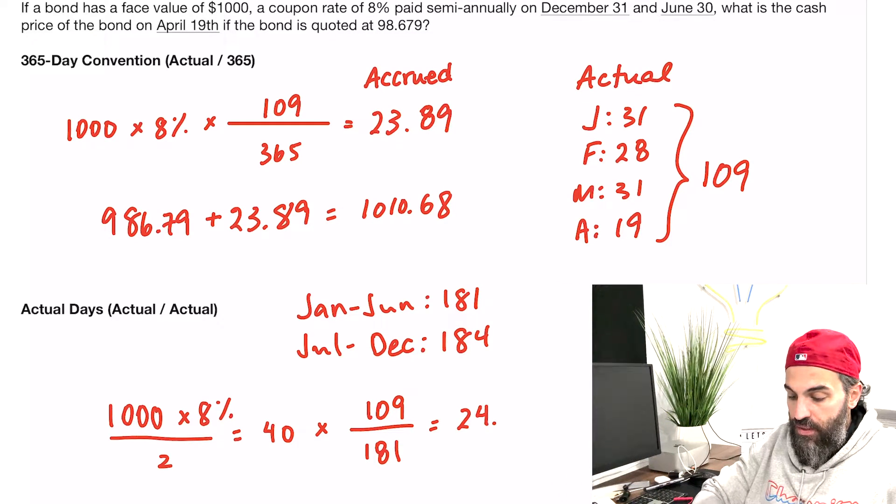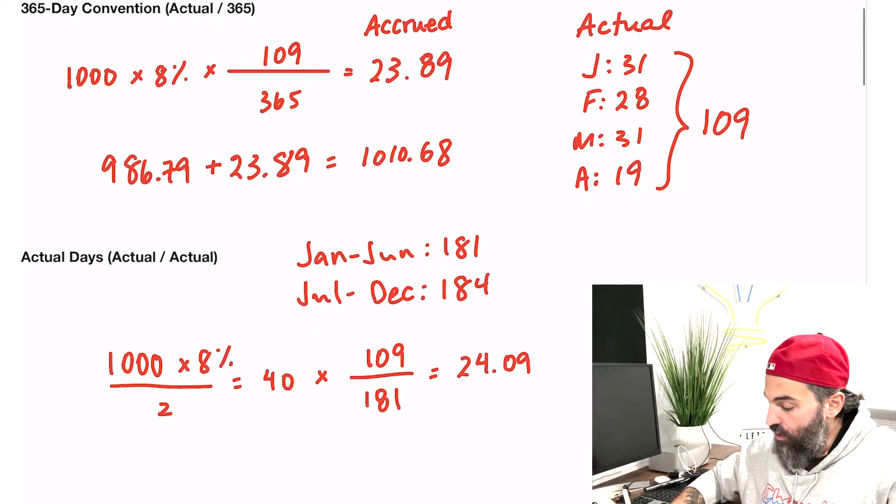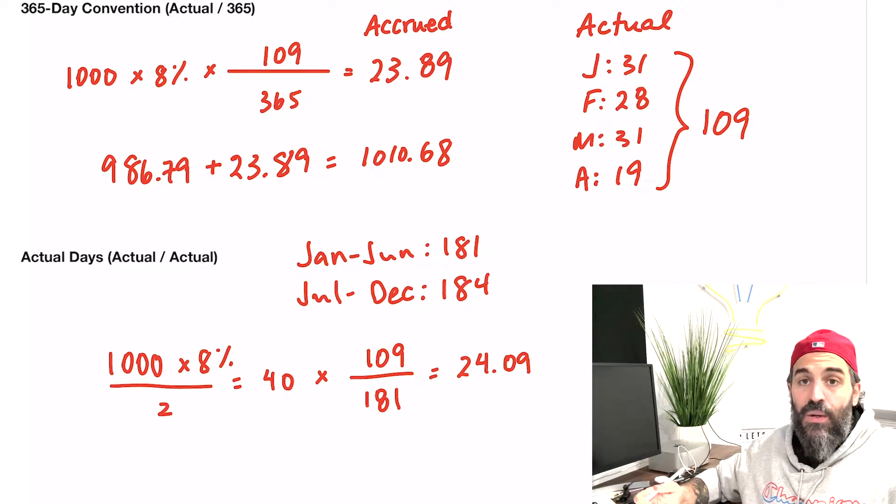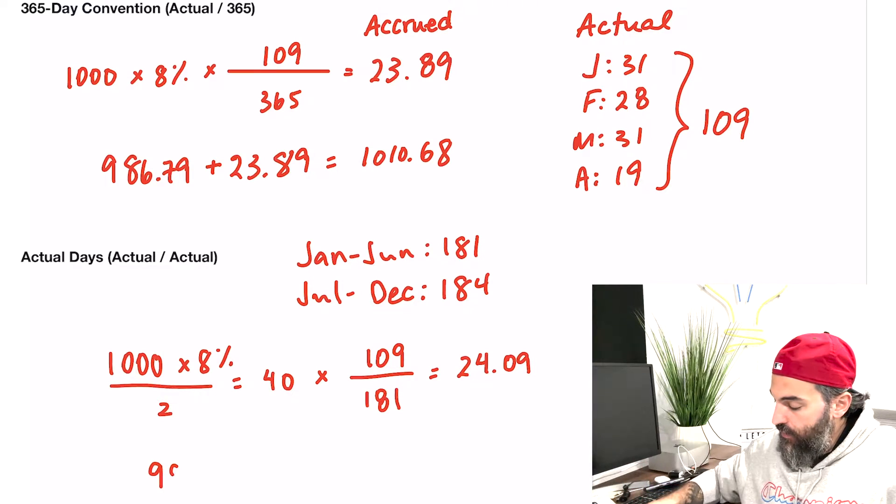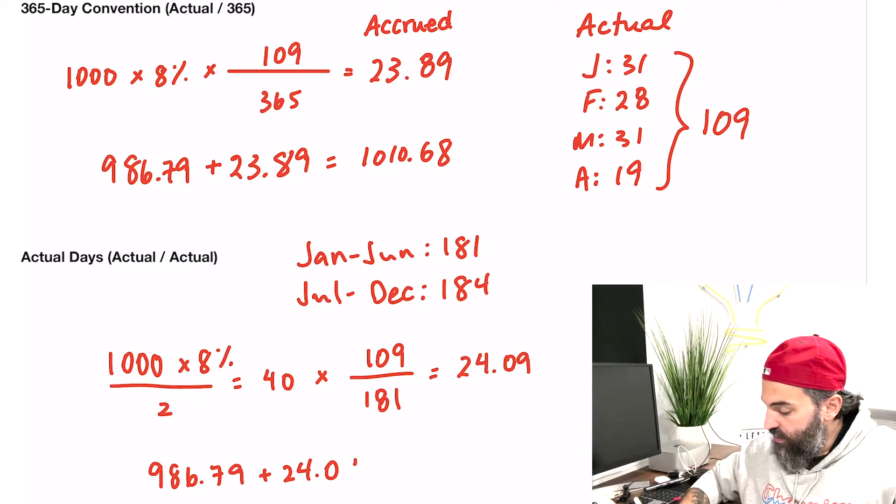If I did $40 times 109 over 181, my accrued interest would be closer to $24.09—not a huge difference, about 20 cents. Then I would add that to my quoted price: $986.79 plus $24.09 equals $1,010.88.